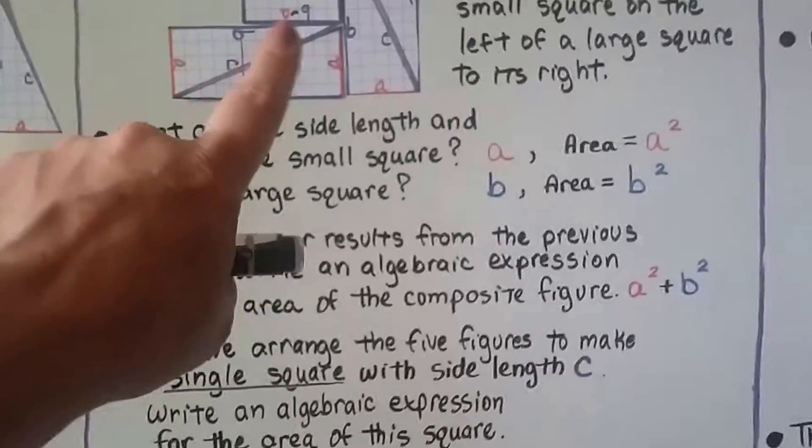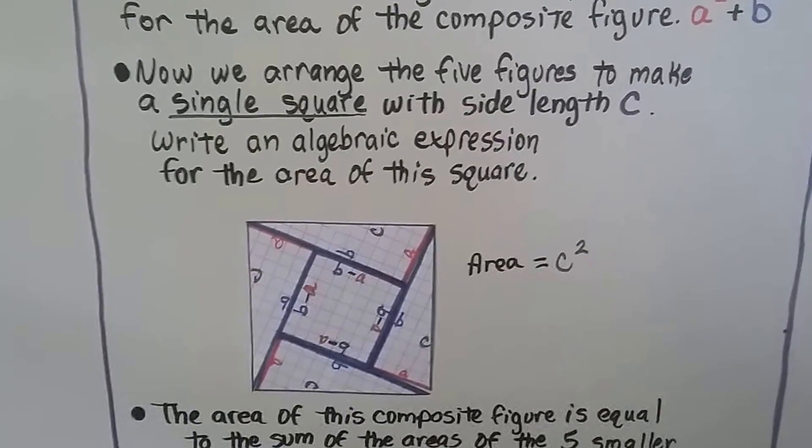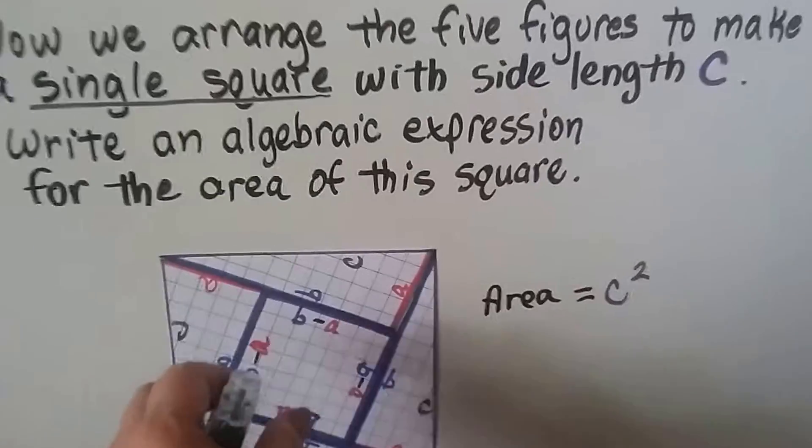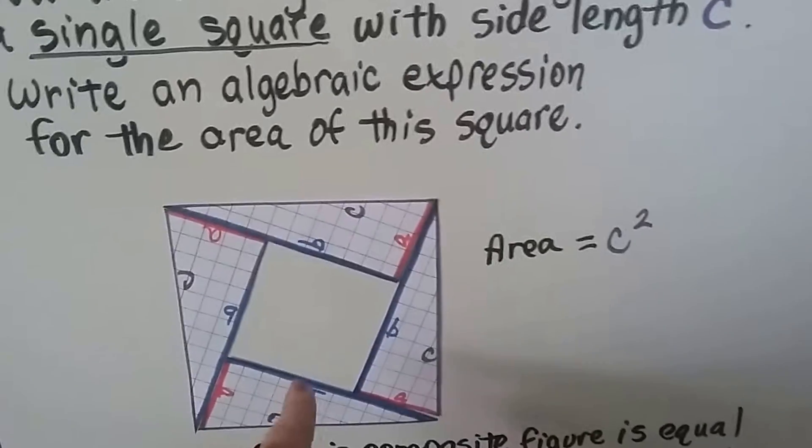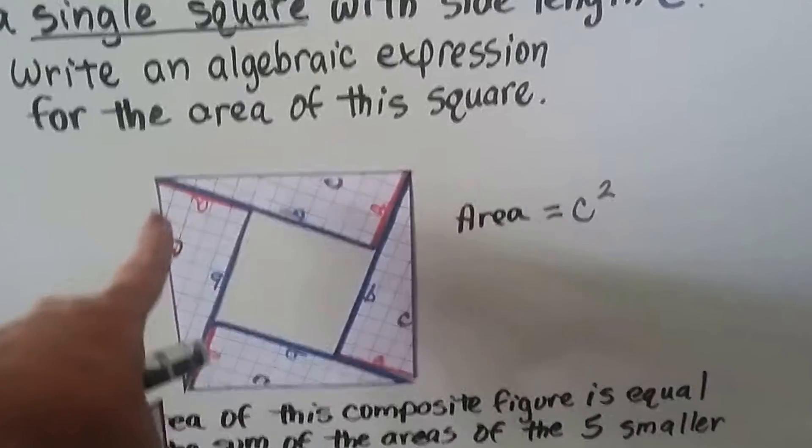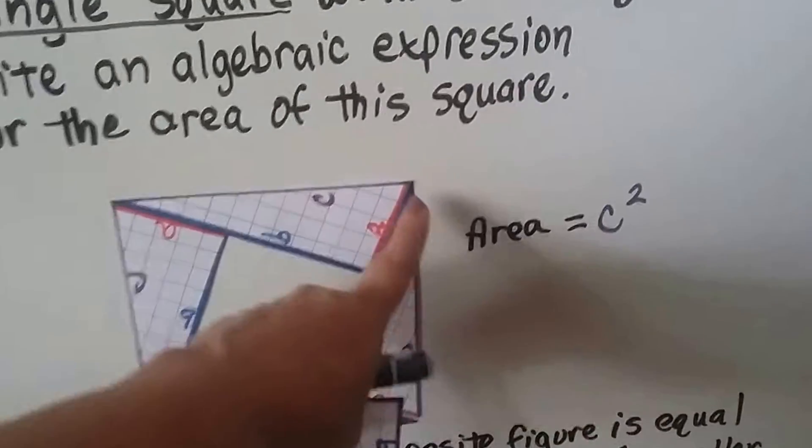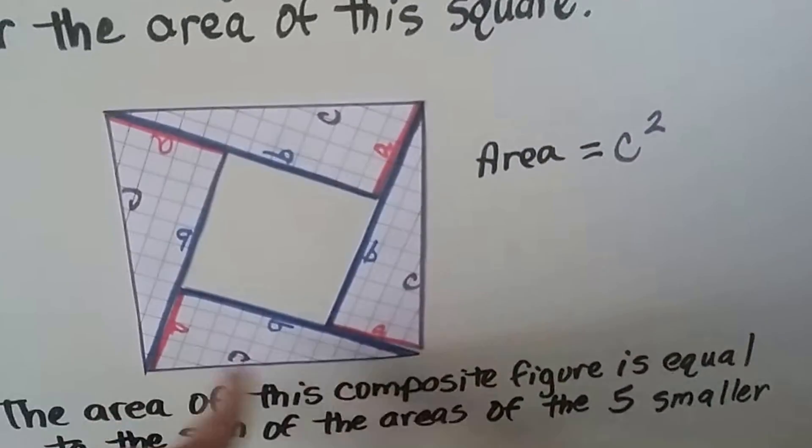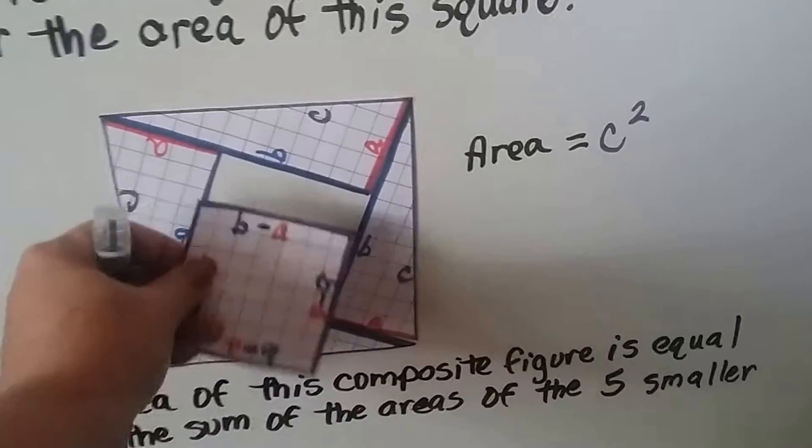Now, we can change this and rearrange the five figures to make a single square. So if you look, I've got all the b's inside and all the hypotenuses on the outside. See that? And because every hypotenuse is on the outside making the edge of the square, my area would be c squared.